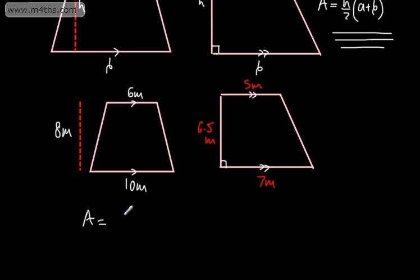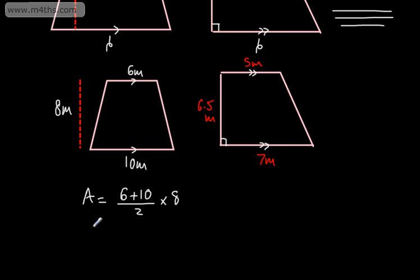For the first trapezium, the area is the top plus the bottom — 6 plus 10 — divided by 2, then multiplied by the perpendicular height. This calculation is just the average of the two parallel sides. So 6 plus 10 is 16, divided by 2 is 8, then 8 times 8 gives us 64 metres squared. We know for area our units will always be something squared — nice and straightforward.